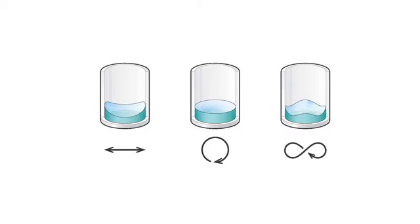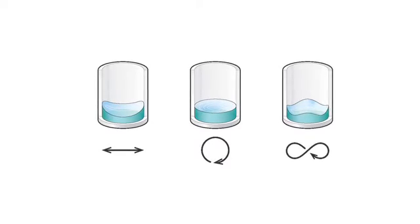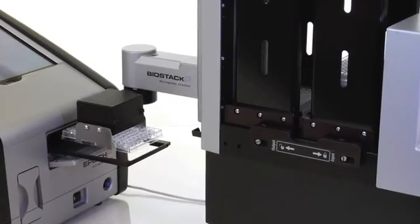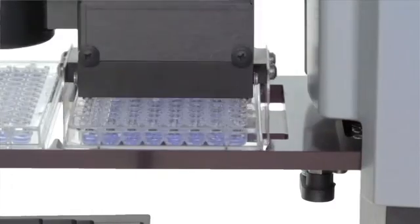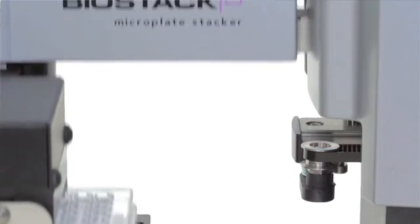Programmable linear, orbital and double orbital shaking profiles provide additional flexibility. To build even more efficiencies into your workflow, EPOCH2's compact footprint makes it readily compatible with BioStack and third-party automation.